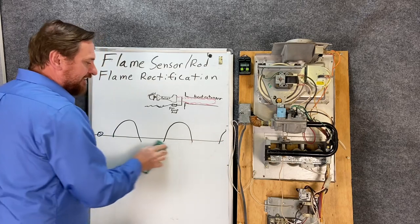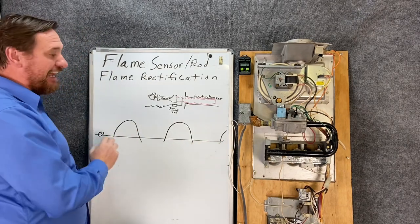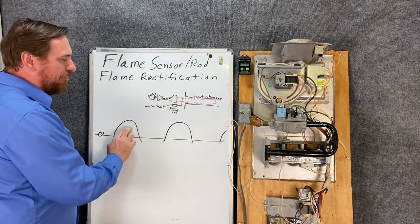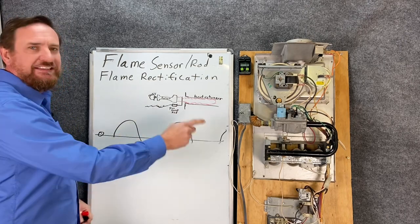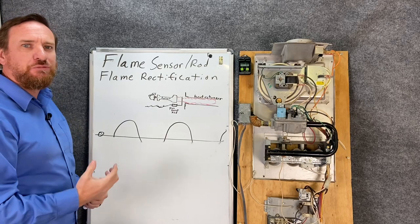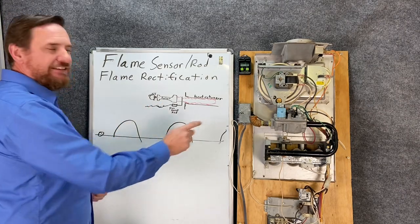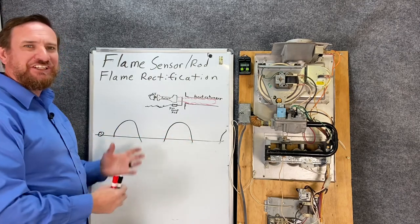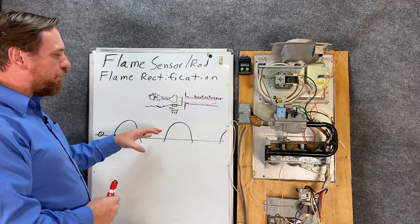So what we're going to actually do on flame rectification is erase our alternating current. So now if we see it's no longer an alternating current, which means positive, negative, it's now a DC current, but really it's not even a DC current, it's a pulsating DC current. So the control board is reading this pulsating DC current, and so that's how the control board knows that the flame is there. It's a very unique DC current. So I think that's absolutely awesome.